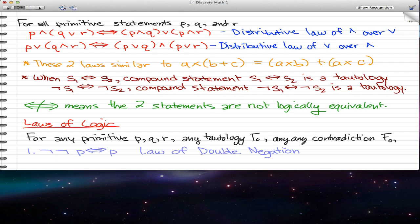And what we have next is the laws of logic. This is something that you really have to remember because it's really important. If you don't remember it, then you're probably going to fail your whole course, so remember it. For any primitive p, q, r, any tautology T, and any contradiction F0, follow these laws of logic.